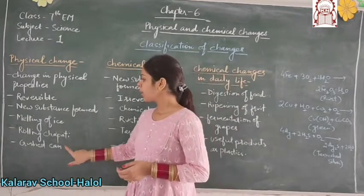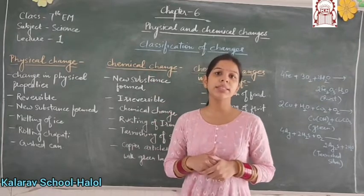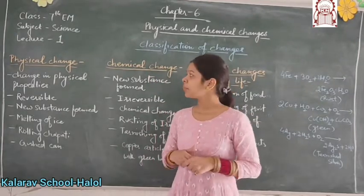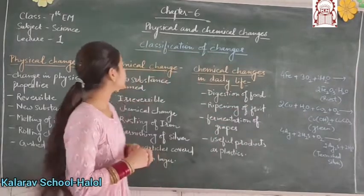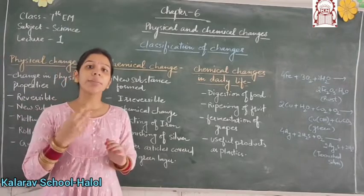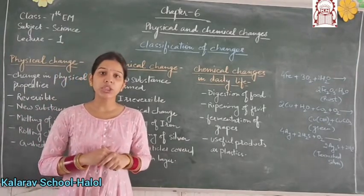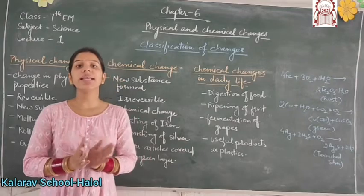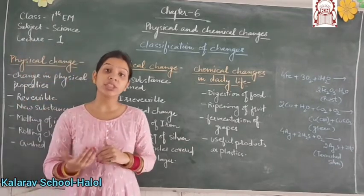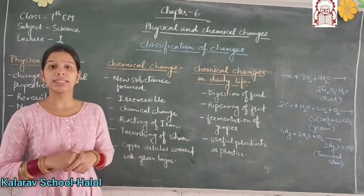Rolling of chapati and the crushed can are also examples. There are several examples in your book which you can study about physical changes. Number 2, chemical change — as the name describes, in a chemical change, the physical as well as chemical properties of the substance are changed, and there is a production of a new substance.